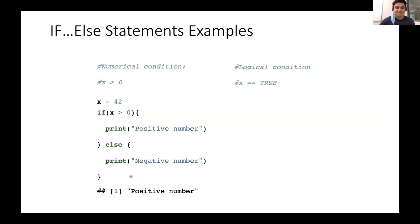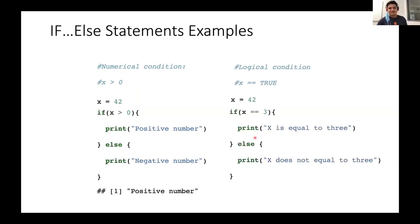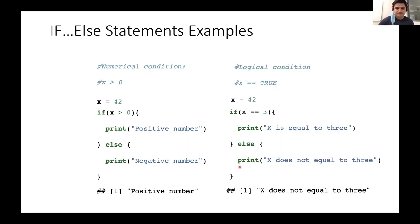Looking at a logical condition where x evaluates as true: x equals 42. This time I write if x == 3, print 'x is equal to 3'; else, print 'x is not equal to 3.' Since x is 42, the condition evaluates to false, so it skips the first code block and executes the else statement, printing 'x does not equal 3.' That's how if-else statements work: evaluate the condition, execute code if true, or execute the else block if false.